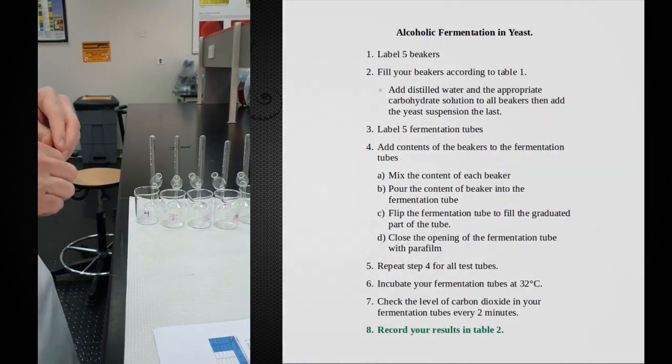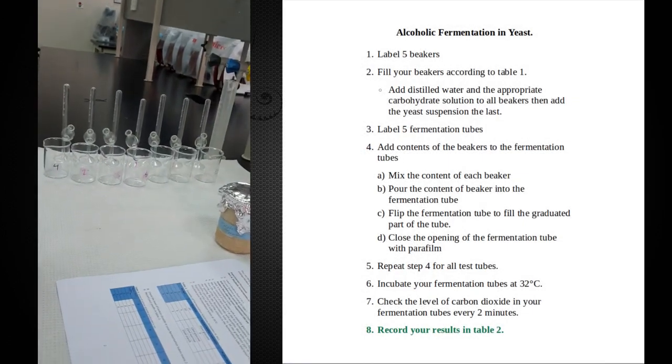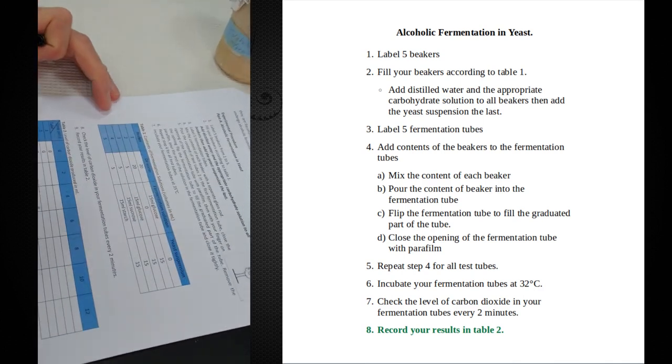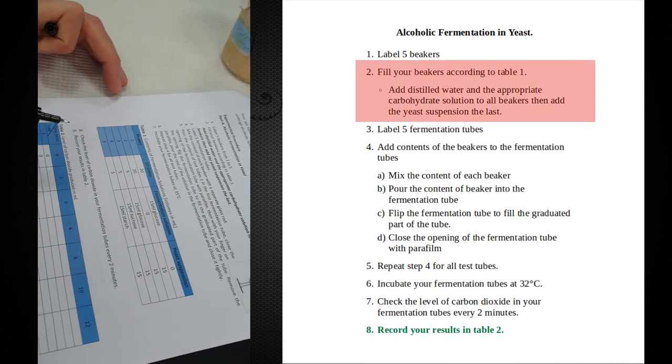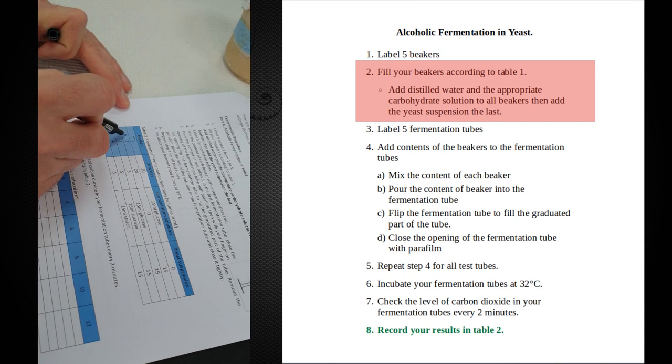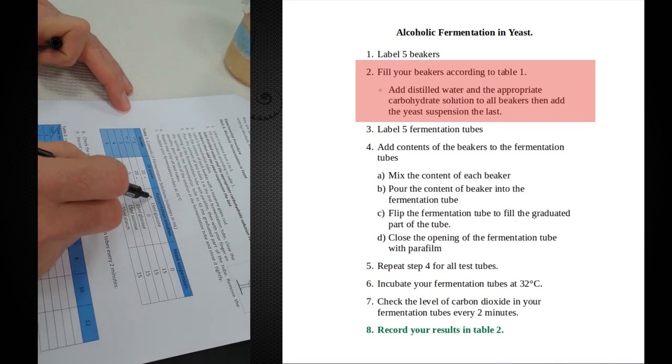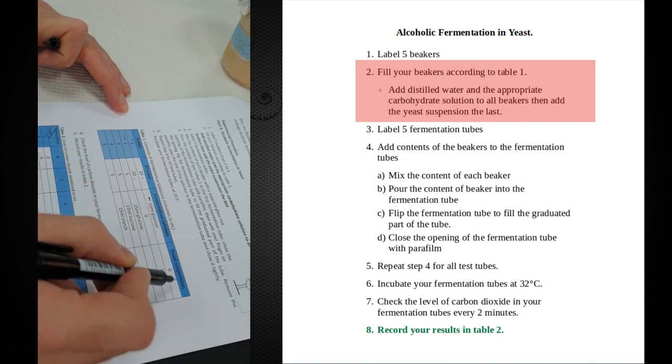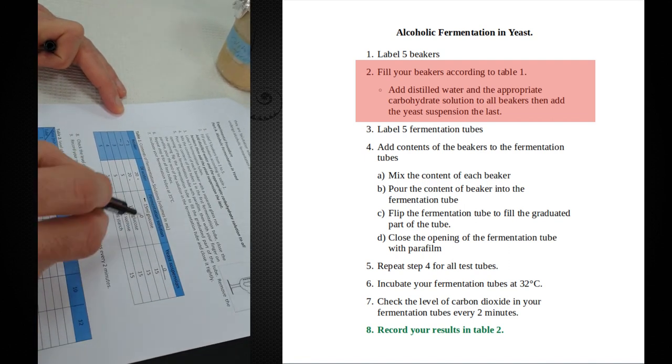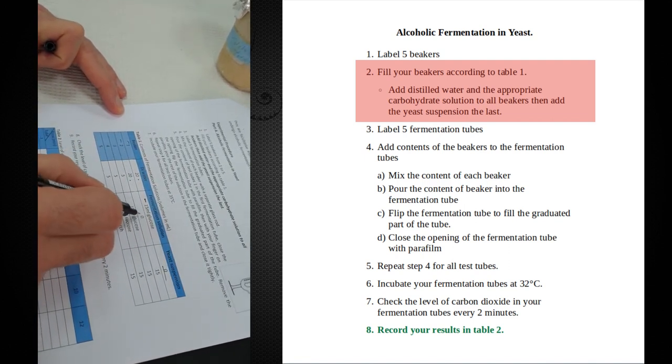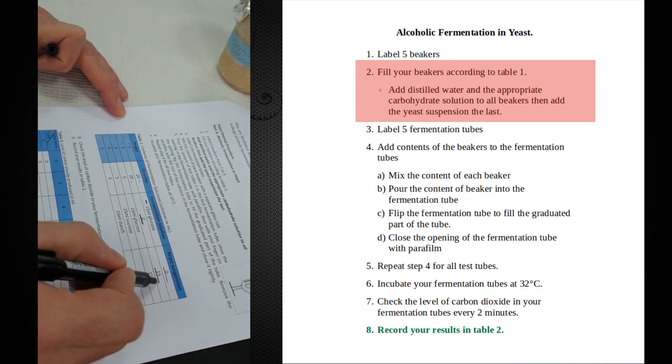First things first, we're going to set up some negative controls. When you look at our beakers, beaker 1 and beaker 2 both get water. Beaker 1 gets fermentation solution, 50 ml of glucose, but no yeast. Whereas beaker 2 gets no fermentation solution, it only gets yeast.